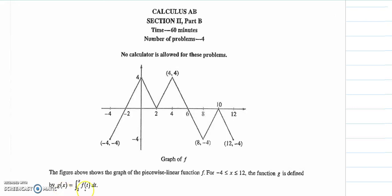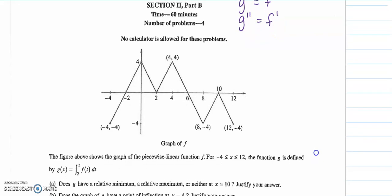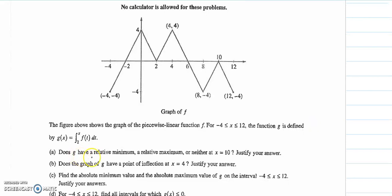So the fact that g is built from this integral makes me understand that g prime is equal to f and g double prime is equal to f prime. The first couple questions are having me talk about g having a relative min or max.